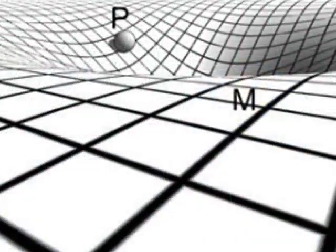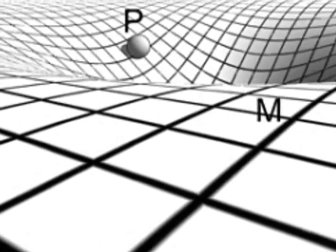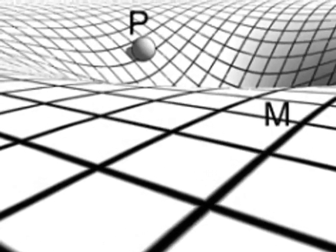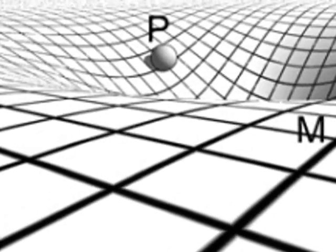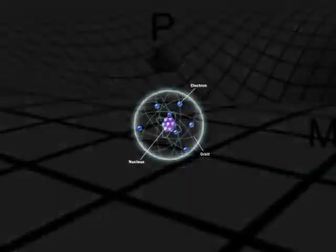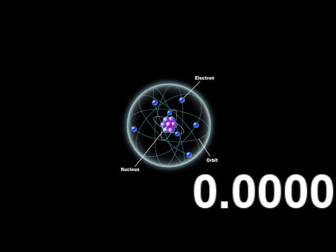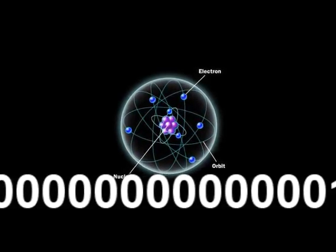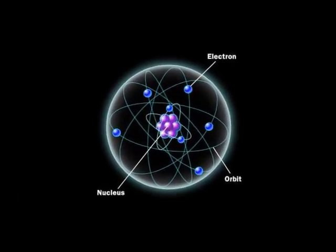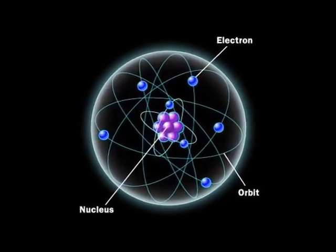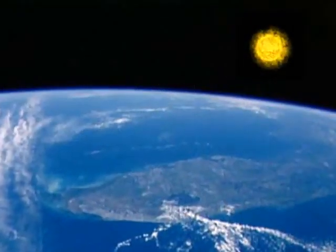Although gravitational waves pass straight through matter, their strength weakens proportionally to the distance traveled from the source. A gravitational wave arriving on Earth will alternately stretch and shrink distances, but on an incredibly small scale — by a factor of 10 to the negative 21st, or 1 sextillionth, for very strong sources. That's roughly equivalent to measuring a change the size of an atom in the distance from the Sun to the Earth.